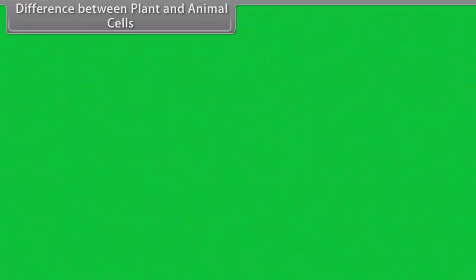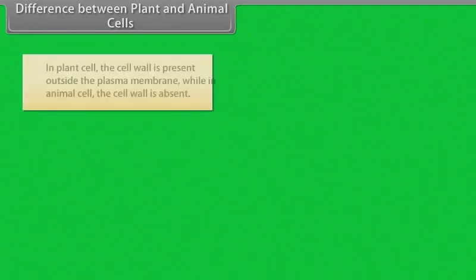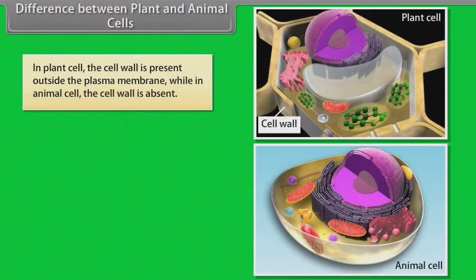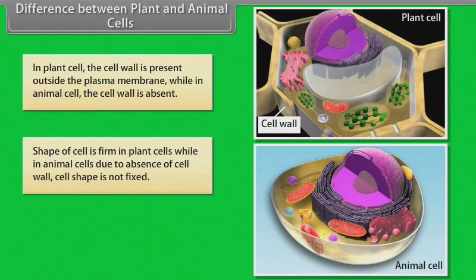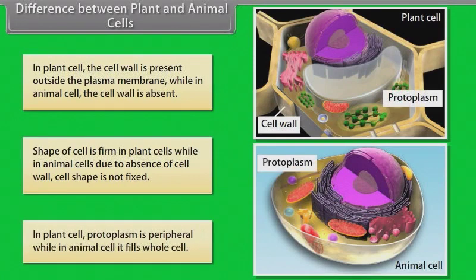Difference between plant and animal cells: In plant cells, the cell wall is present outside the plasma membrane, while in animal cells the cell wall is absent. The shape of the cell is firm in plant cells, while in animal cells, due to the absence of a cell wall, the cell shape is not fixed. In plant cells, protoplasm is peripheral, while in animal cells it fills the whole cell.